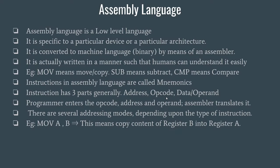The opcode is the code of what you actually want to perform — for example, if you want to perform addition, there is a particular code corresponding to that operation; if you want to subtract, there is a code for that. For different operations there are different codes. The data or operand is the part of the instruction on which you want to perform that operation — for example, the numbers you want to add. There are also several addressing modes depending on the type of instruction.